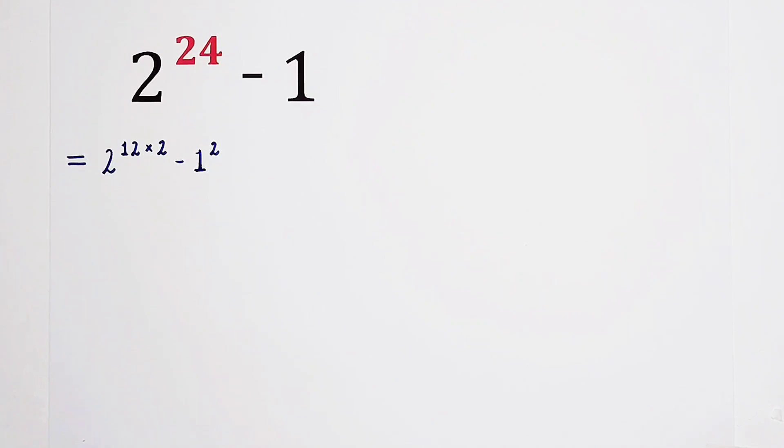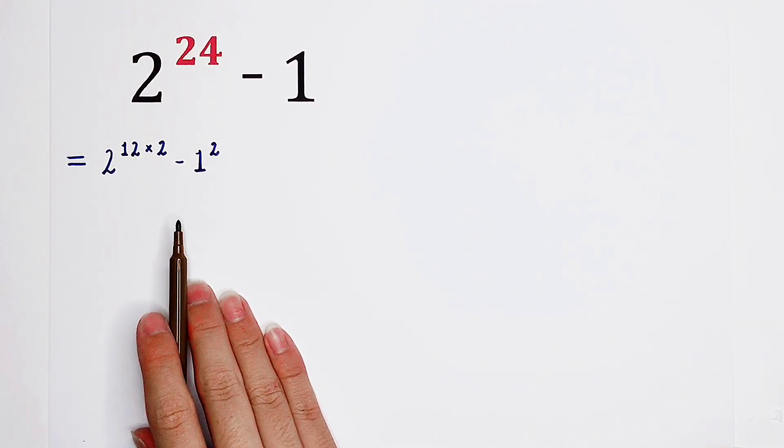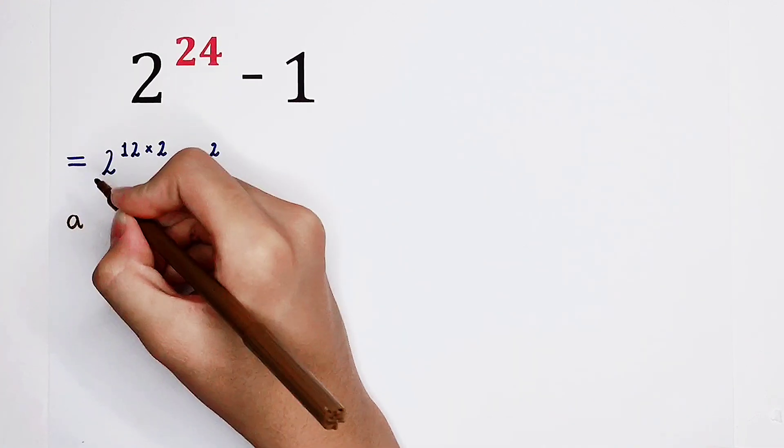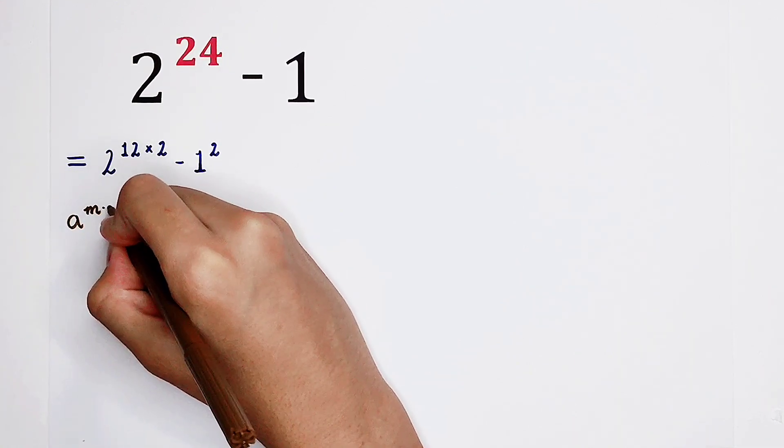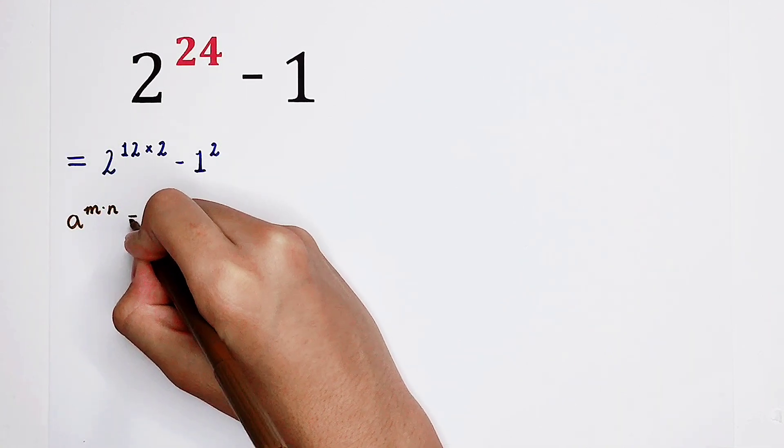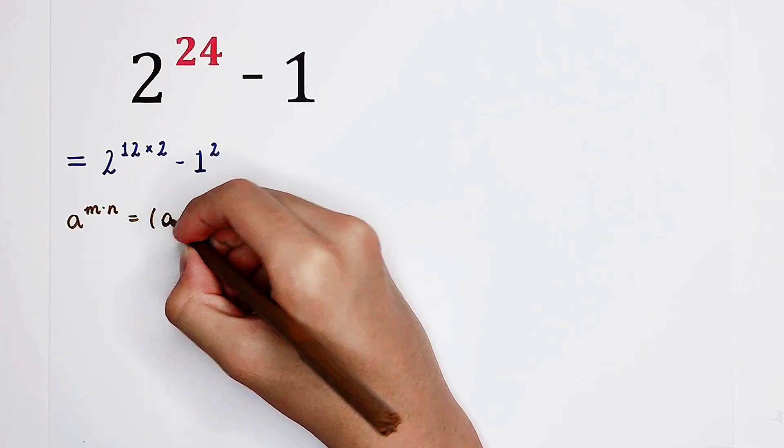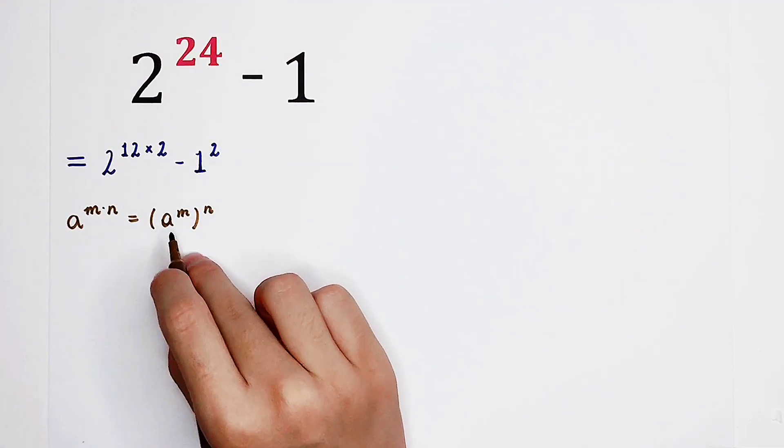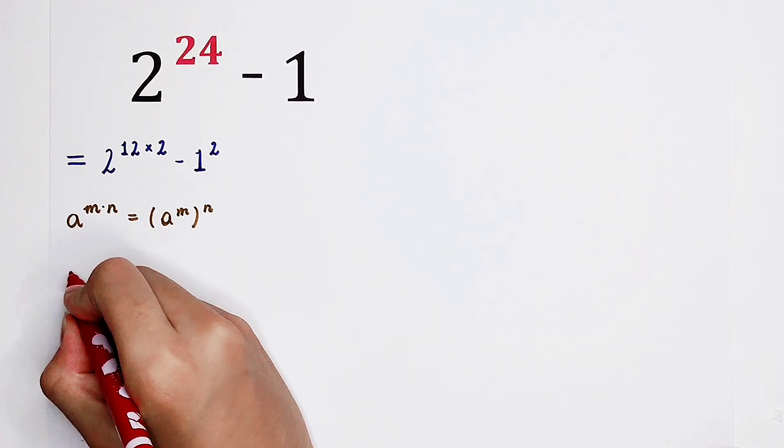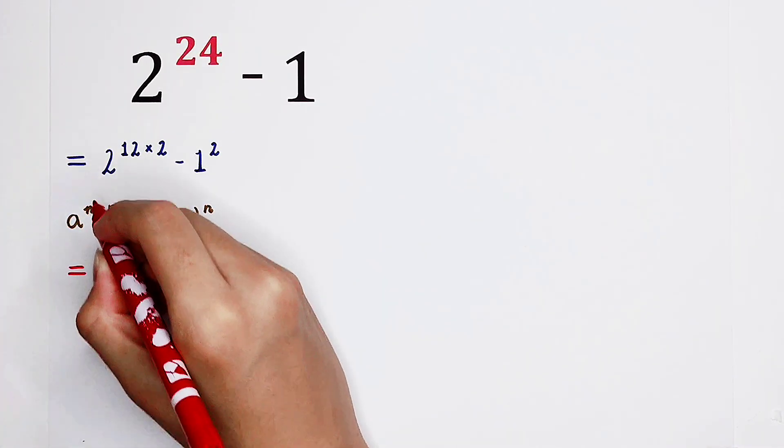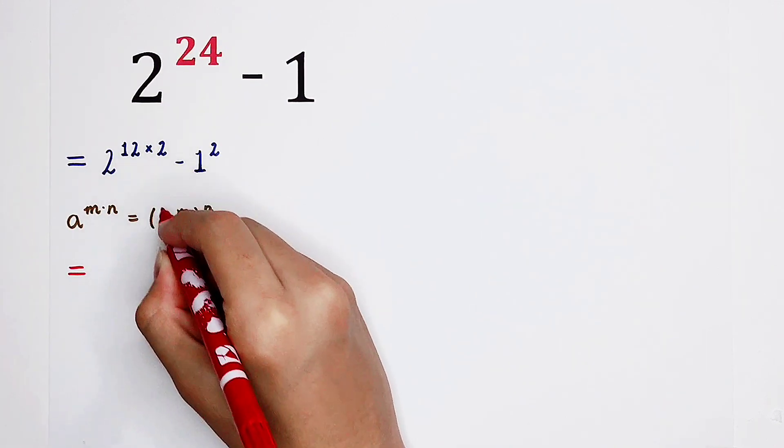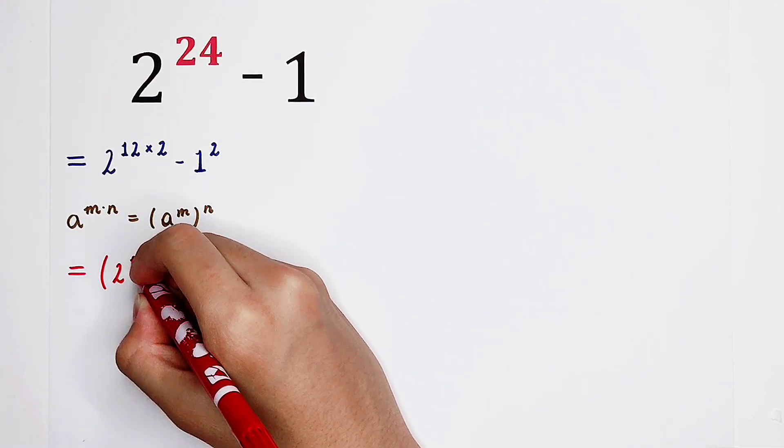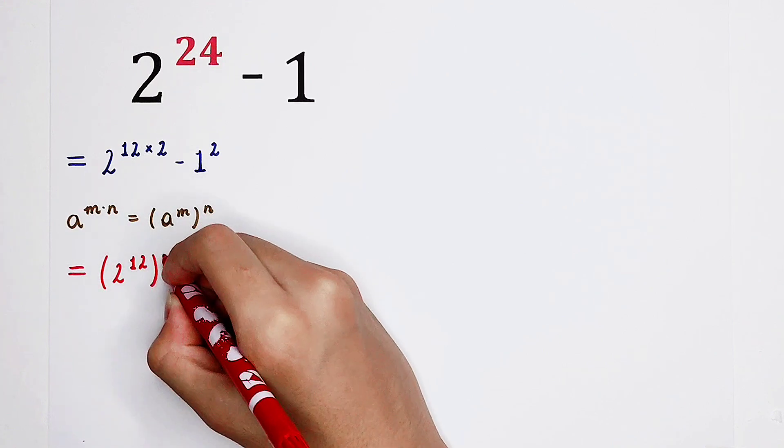Which formula should we use? From now on, I'm going to use the brown pen for the formulas. Which formula? Of course, this formula: a to the power of m times n is equal to a to the power of m or to the power of n. So by using this formula, 2 to the power of 12 times 2, m is 12, n is 2. So it can be written as 2 to the power of 12 or squared.